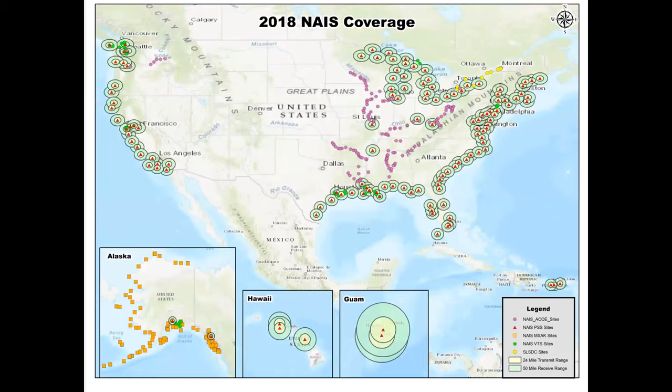The coverage map shows the Marine Exchange towers in Alaska — pretty extensive coverage around the Alaska coast. When you get to the mainland U.S., there's both coastal and inland coverage, but it's not complete. We do know there are coverage gaps, and that's something we're trying to both quantify and fill in over time as real estate and connectivity issues allow.